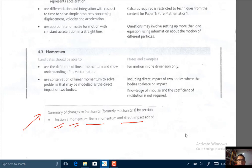So what we need to do in momentum will be, let's look at the bullet points. We have to use the definition of linear momentum and show understanding of its vector nature. And we'll have to use the conservation of linear momentum, the principle of conservation of linear momentum to solve problems that may be modeled as the direct impact of two bodies.